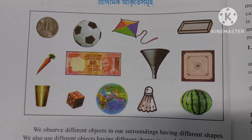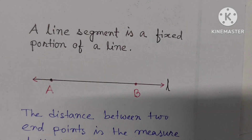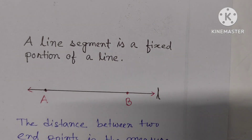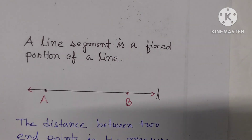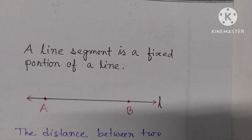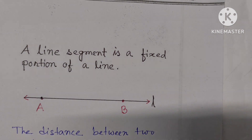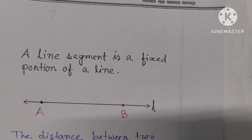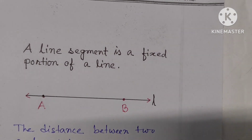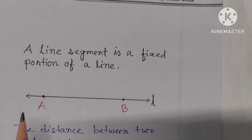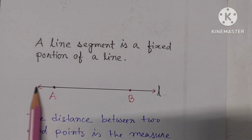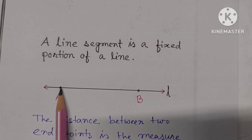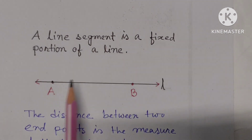Let us cover the line segment. A line segment is a fixed portion of a line. It has two endpoints.